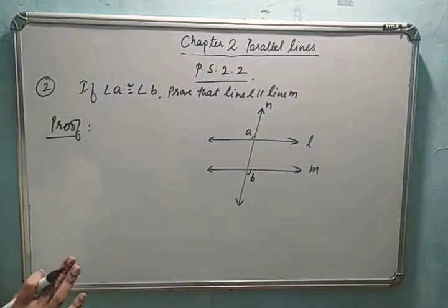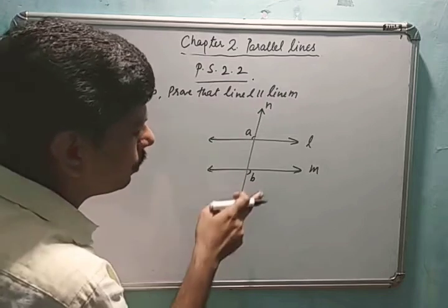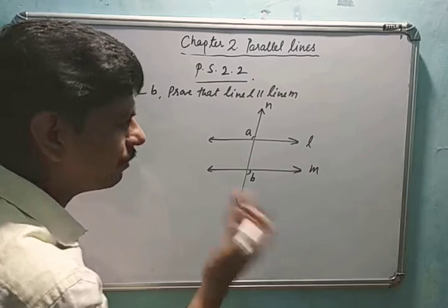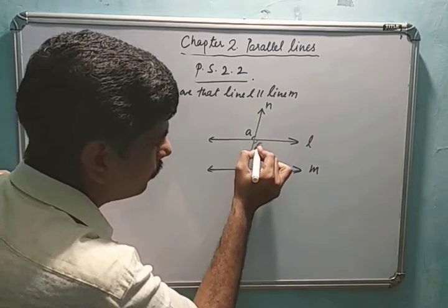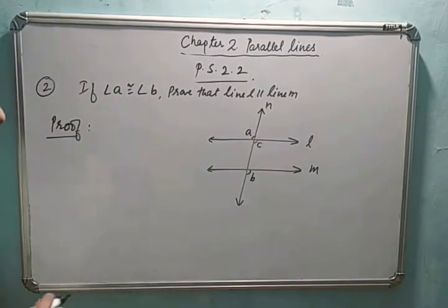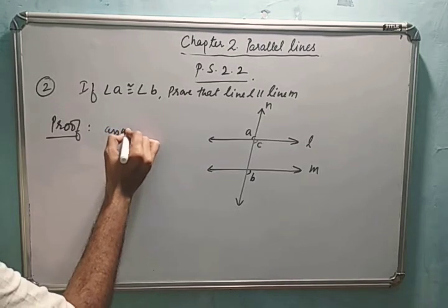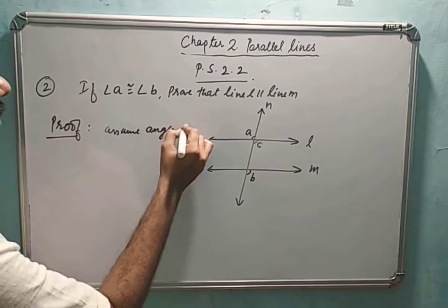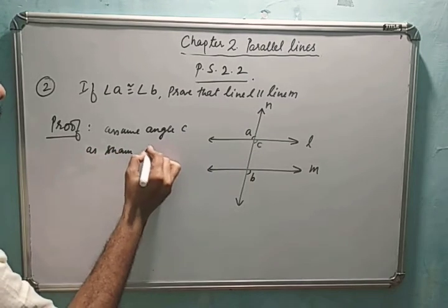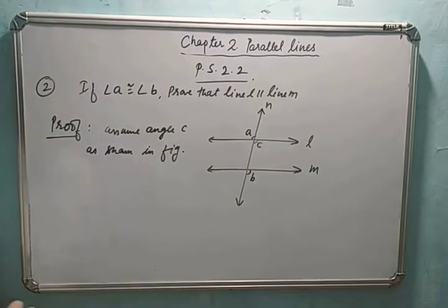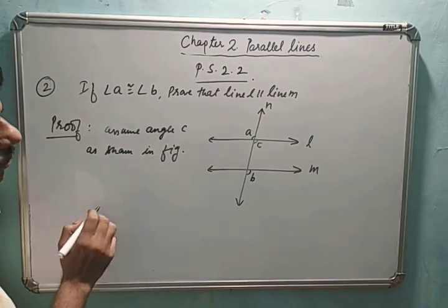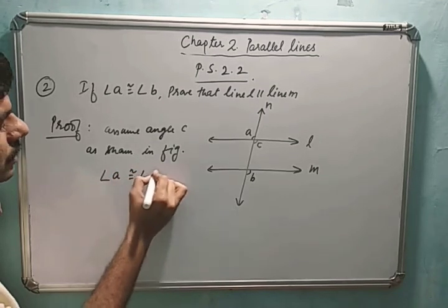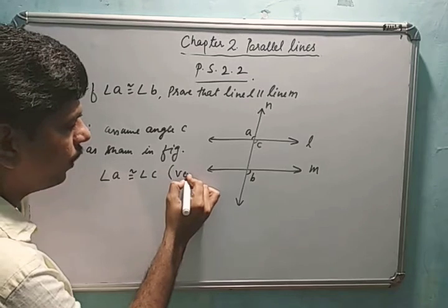We are going to write the proof. If you look at angles a and b, they are not standard angles that we can directly define as alternate, corresponding, or interior. So we are going to assume one more angle c, as shown in the figure, which is vertically opposite to angle a. We write: assume angle c as shown in figure. Now, angle a is congruent to angle c — reason: vertically opposite angles.